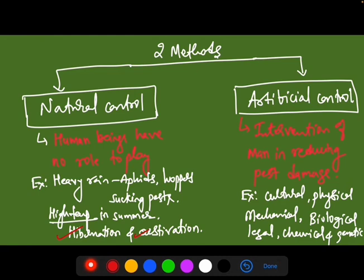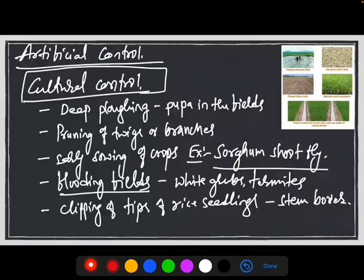In artificial control, the intervention of man in reducing pest damage is very crucial. Some of the methods of artificial control are cultural, physical, mechanical, biological, legal, and genetic controls. Cultural control is a very important method, also called agronomic methods of pest control. Here agronomic practices play a very important role, like deep plowing, also called summer plowing, and pruning of twigs and branches.